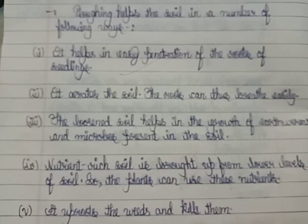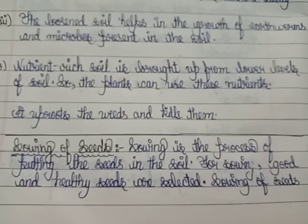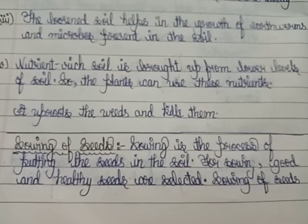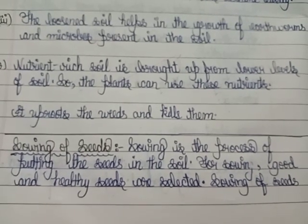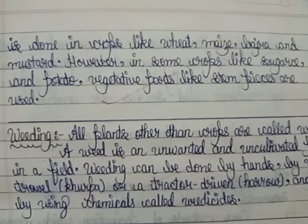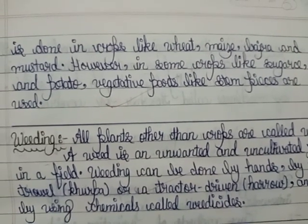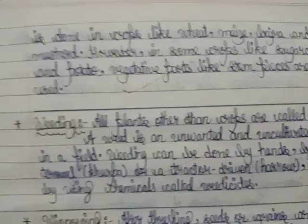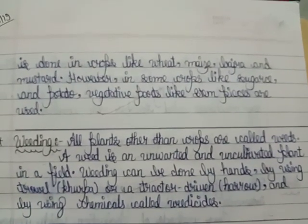The next short note is on the sowing of seeds. Sowing is the process of putting the seed in the soil. Good and healthy seeds are selected for sowing. Sowing is done for crops like wheat, maize, bajra, and mustard. However, in some crops like sugarcane and potato, vegetative parts like stem pieces are used.